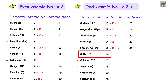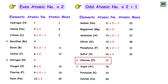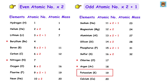Sulfur has atomic number 16, which is even, so 16 times 2 is 32. Chlorine is a star element, so we skip it. Argon is also a star element, so we skip that too. Potassium has atomic number 19, which is odd, so 19 times 2 plus 1 is 38 plus 1, giving us 39.